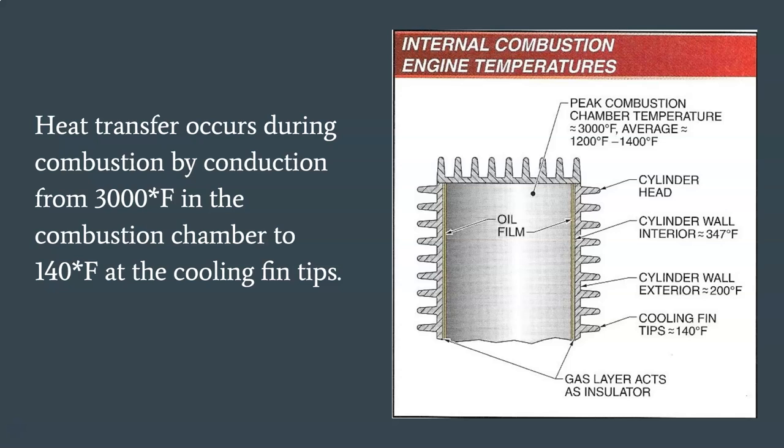Heat transfer through the cylinder wall occurs only by conduction. Although temperatures in the combustion chamber can peak at approximately 3,000°F during the first milliseconds of combustion, an overall average temperature range is between 1,200 and 1,400°F. Cylinder wall temperatures are considerably lower because a thin layer of gasoline adheres to the cylinder wall and acts as an insulator. Heat flows from the combustion chamber through the gasoline and oil film, through the cylinder wall, to the coolest portion of the block at the cooling fin tips.